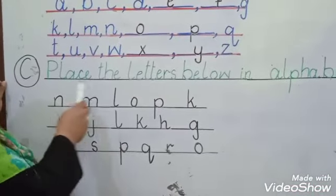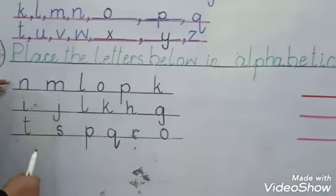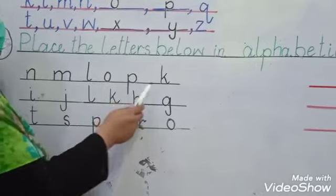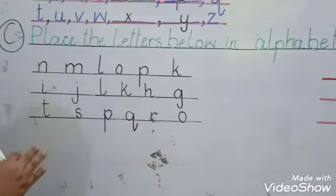Now students, start part C, place the letters below in alphabetic order. Students, now you can see the first order, you can see N, M, L, O, P, K. What do you think, is that this sequence is written?